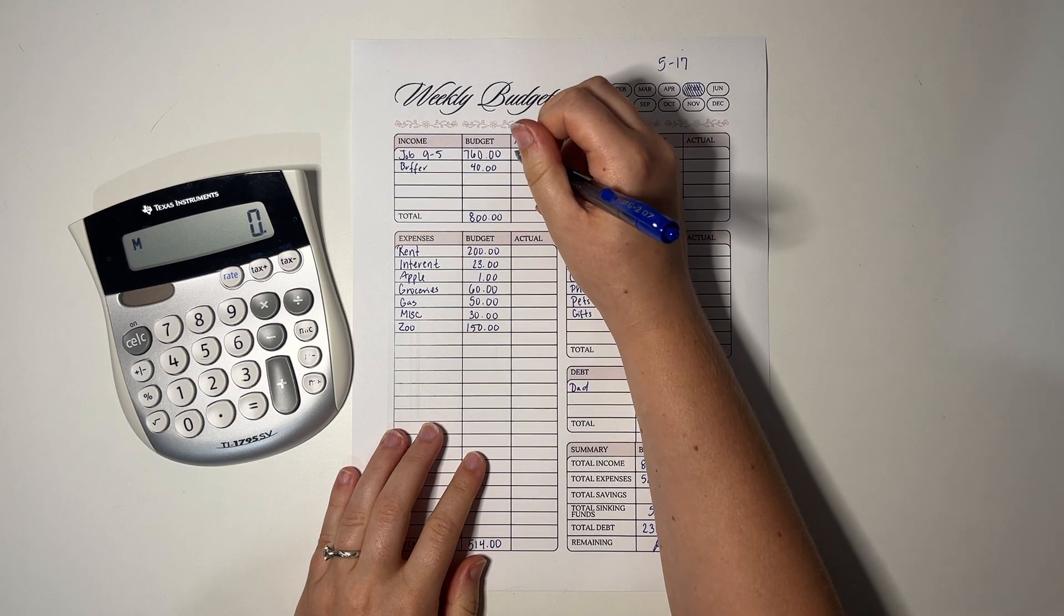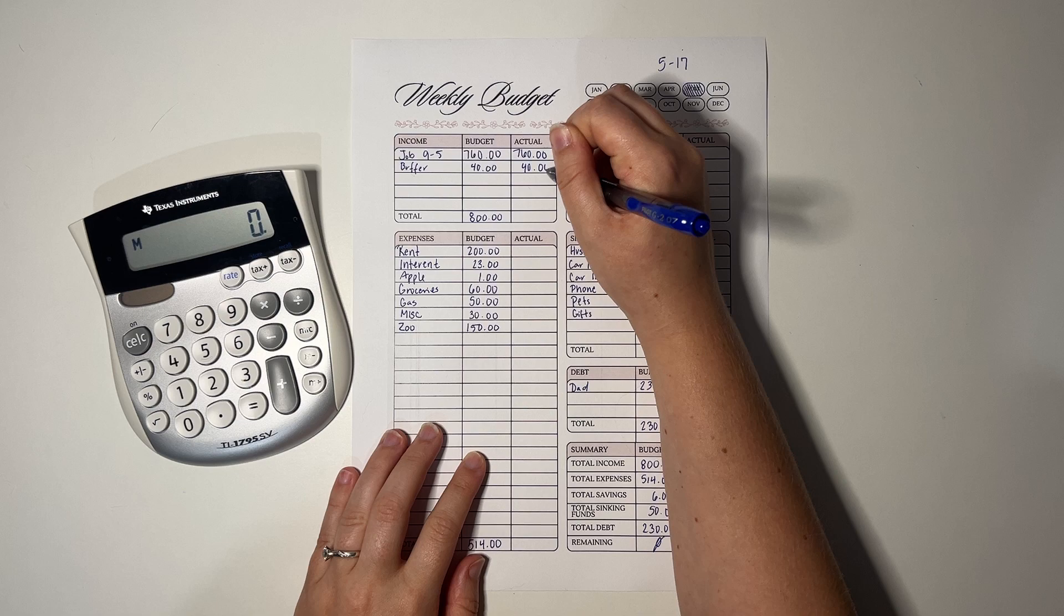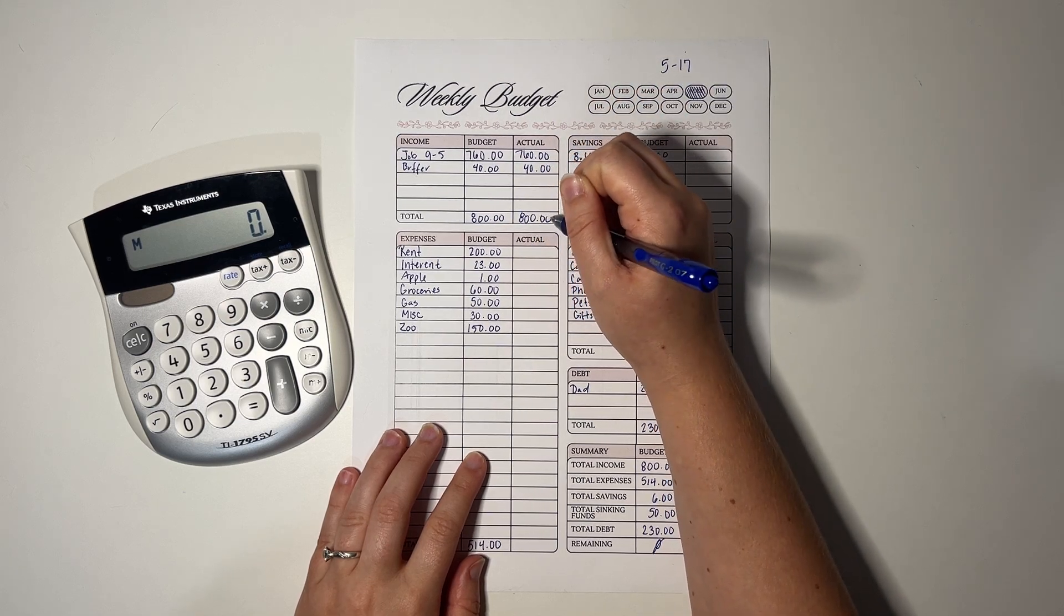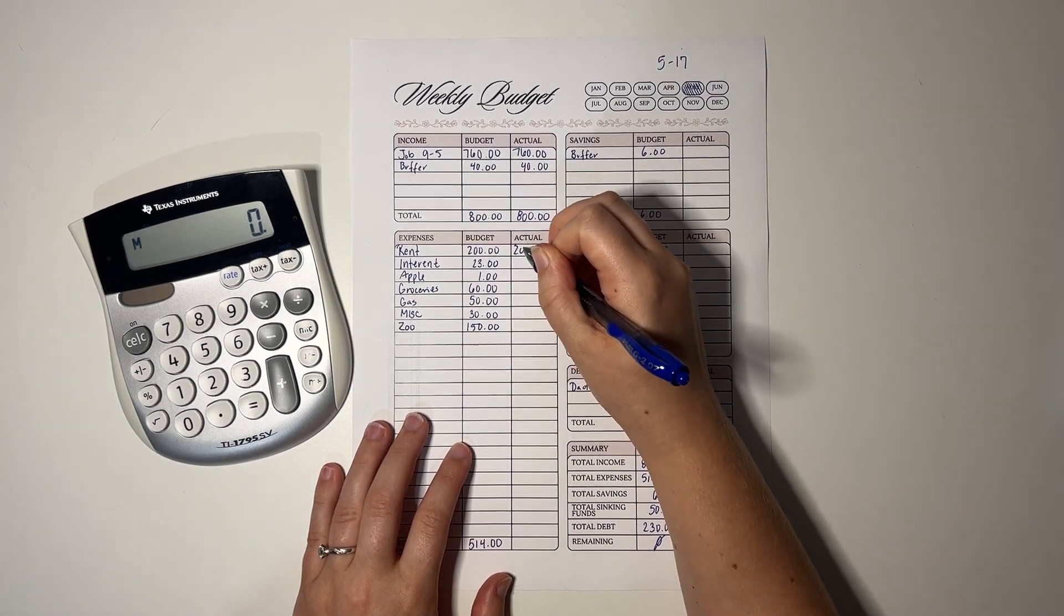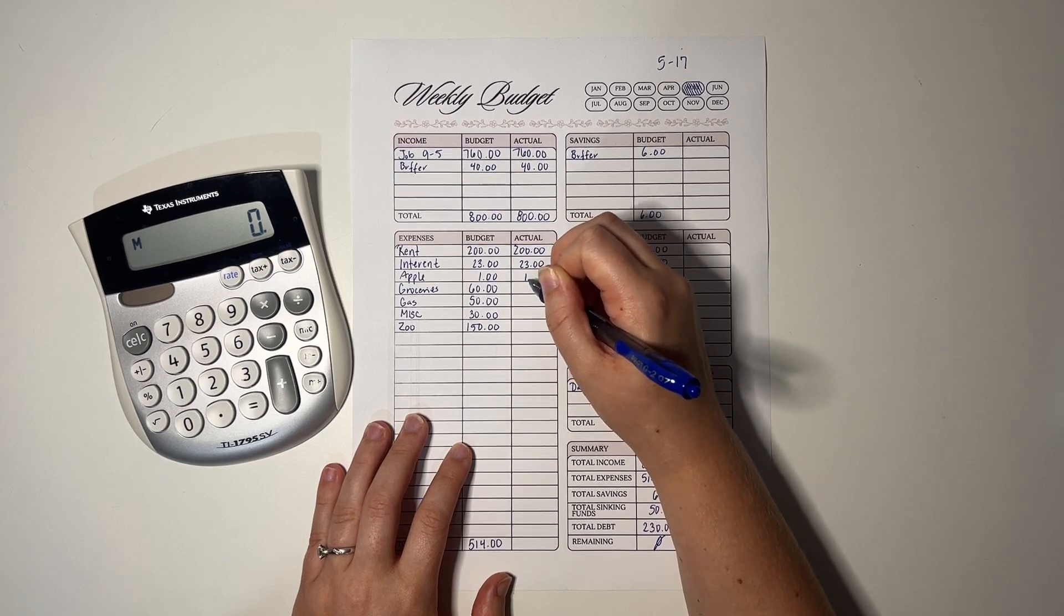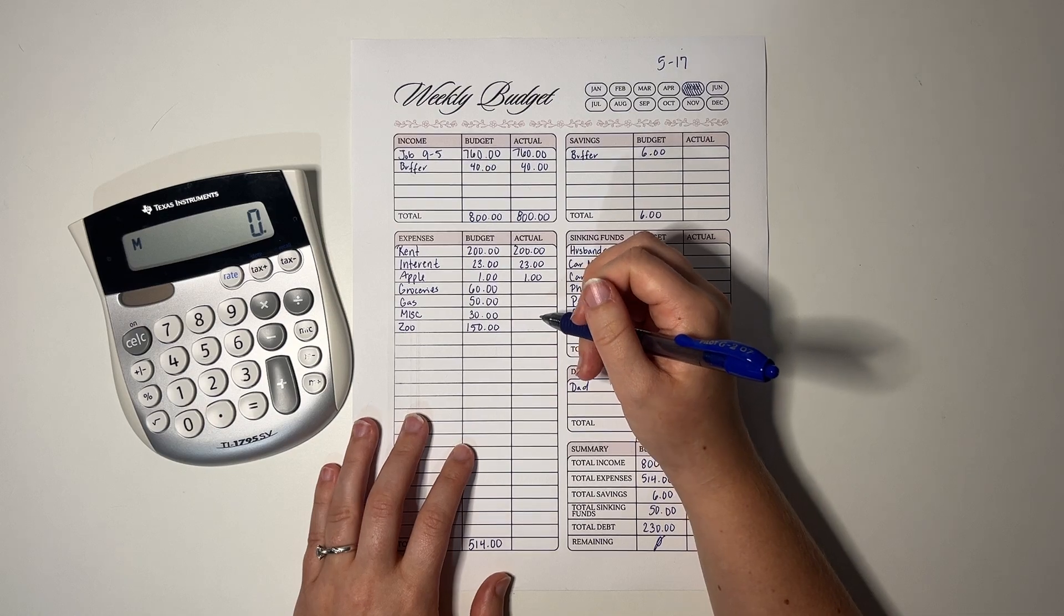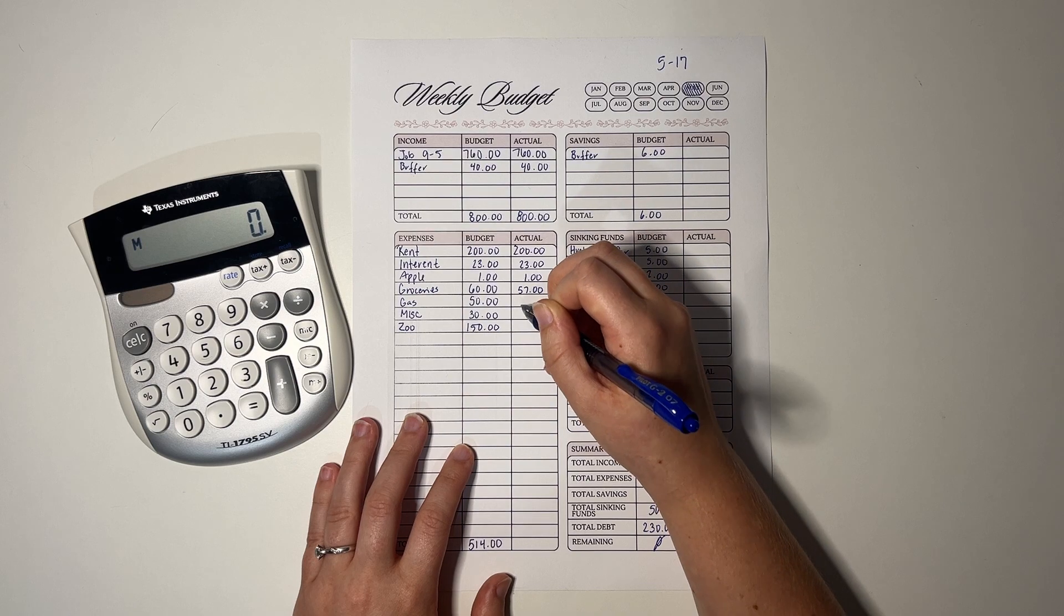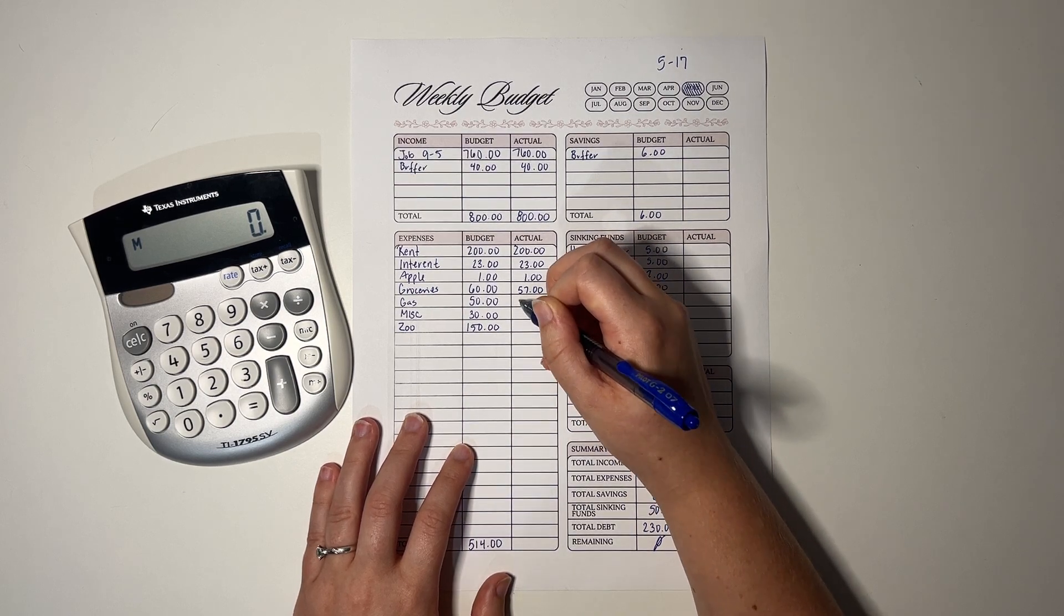We were correct about the amount that we would earn this week, which is always very good. We made $800 that we had to delegate. We put $200 away for rent, $23 away for the internet, $1 away for Apple. Groceries came up to be $3.57, so we have a little bit extra there. Gas was $42. Yes, great.